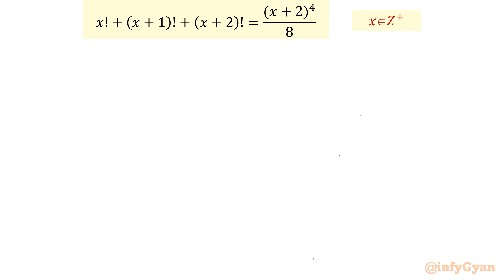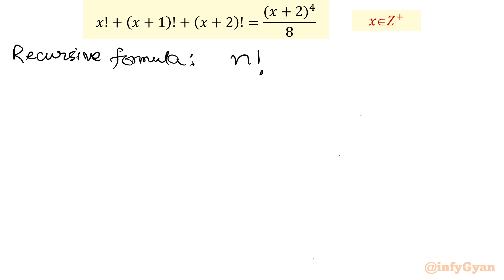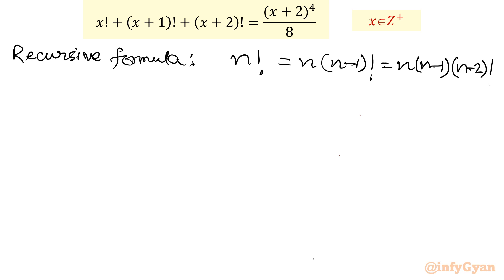Let's get started by writing the recursive formula in factorial notation. The recursive formula states that n factorial can be written as n times (n−1) factorial, or we can also write it as n times (n−1) times (n−2) factorial, and so on if needed.